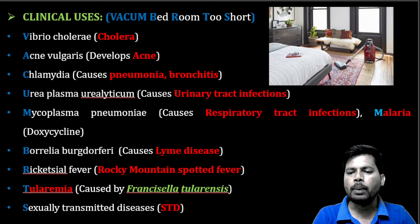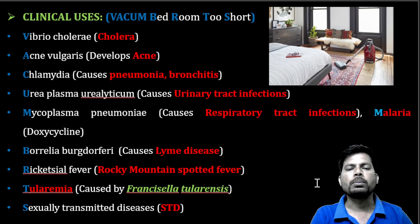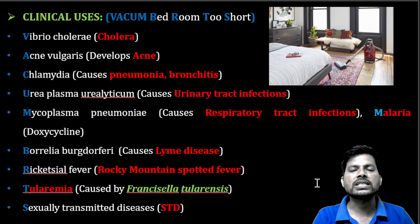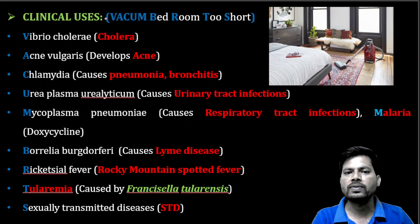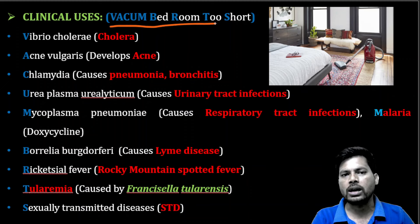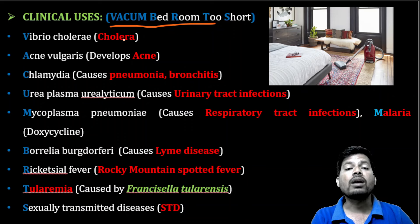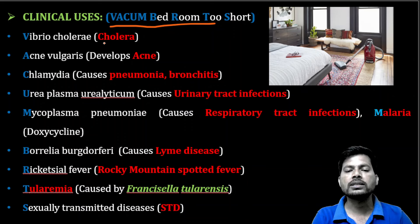In this video we are going to discuss the clinical applications of tetracyclines, which are a broad spectrum category of protein synthesis inhibitors against bacteria. There are multiple applications of tetracyclines, and you can remember all of them with the mnemonic trick: 'vacuum bedroom too short.' Here are the clinical uses of tetracyclines based on disease and causative organism.